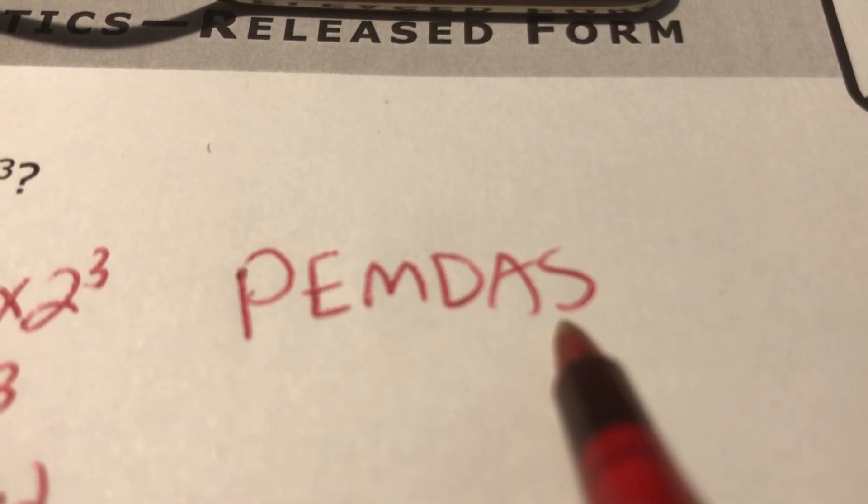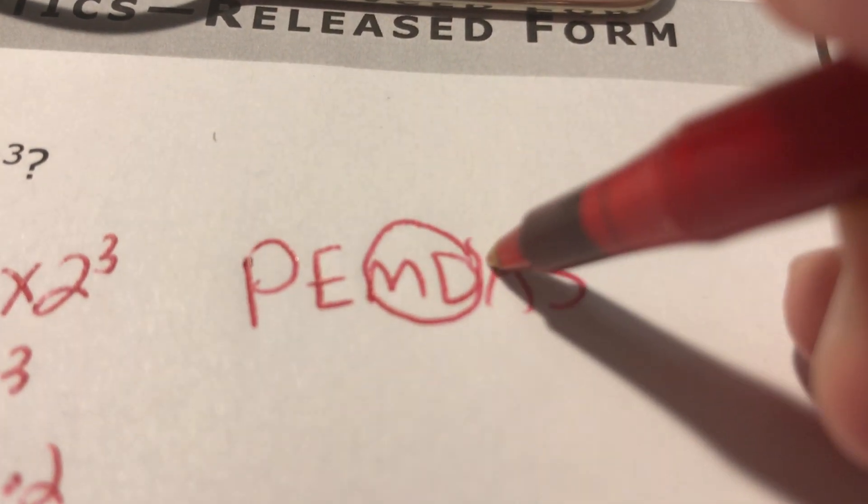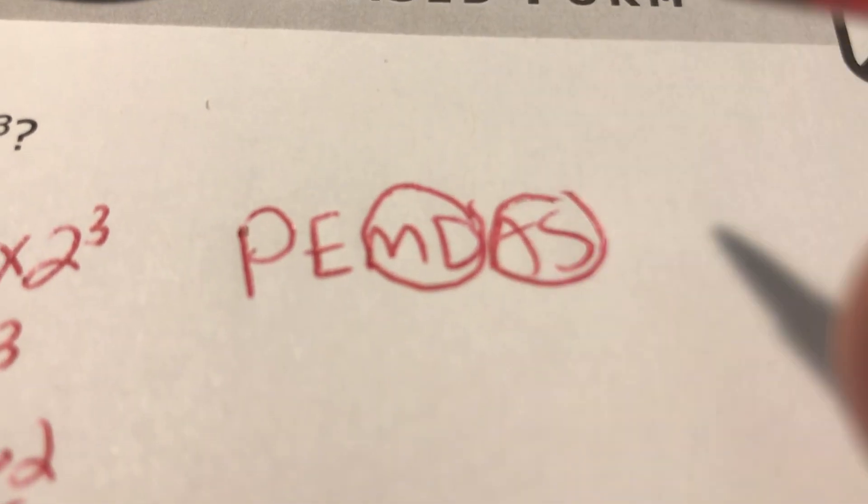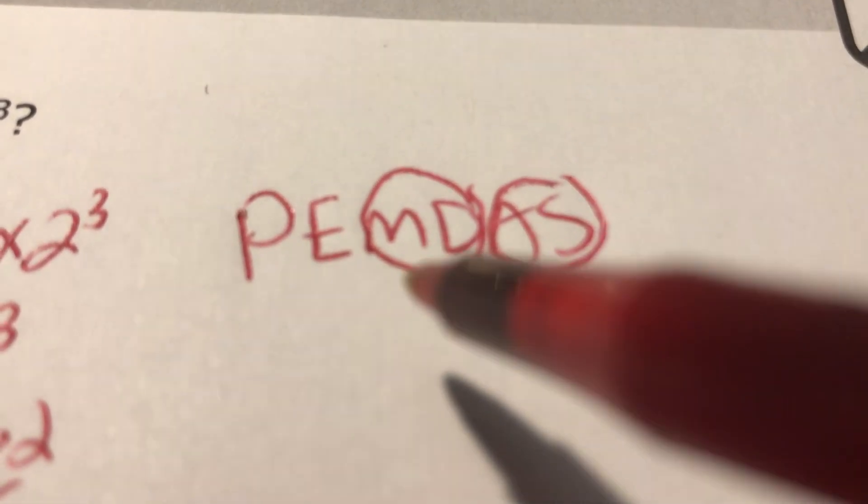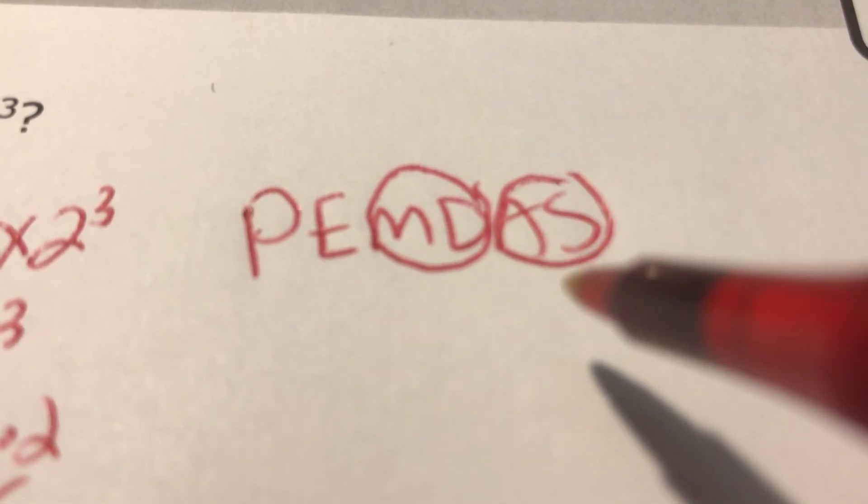And they think that this is the exact order. But they don't realize that multiplication and division are technically the same thing. They're inverse operations. So is adding and subtracting. You have to do them left to right. Why is that? Because multiplying by a fraction is the same thing as dividing. If I wanted to divide by 2, I can multiply by 1 half.